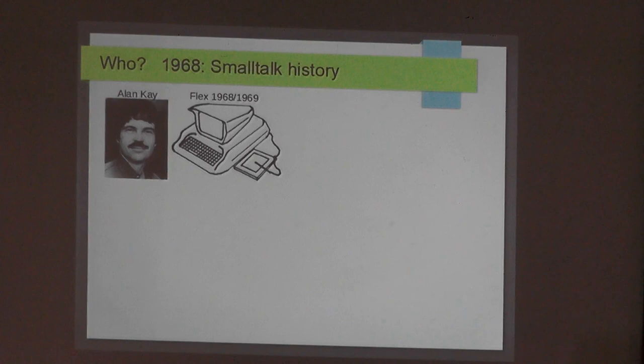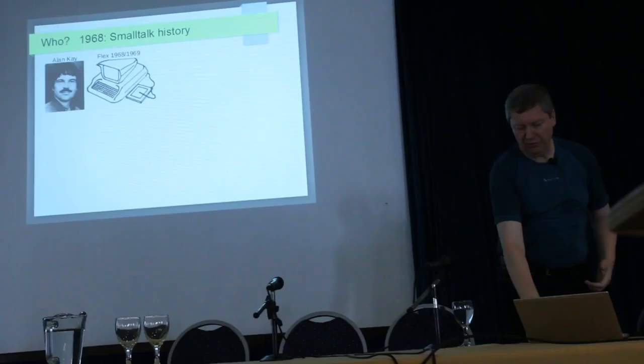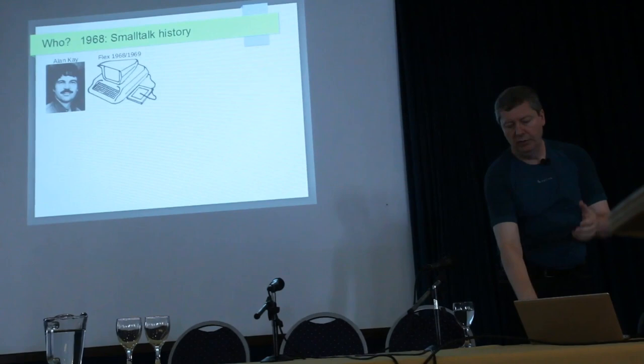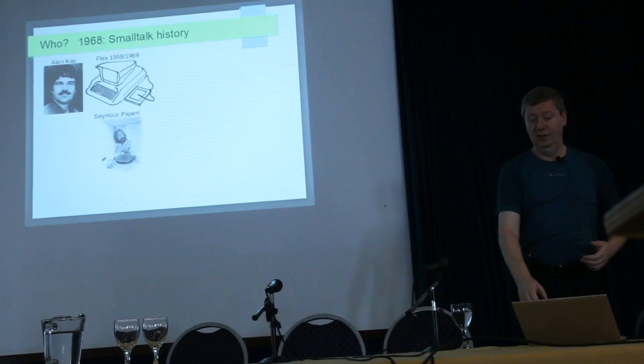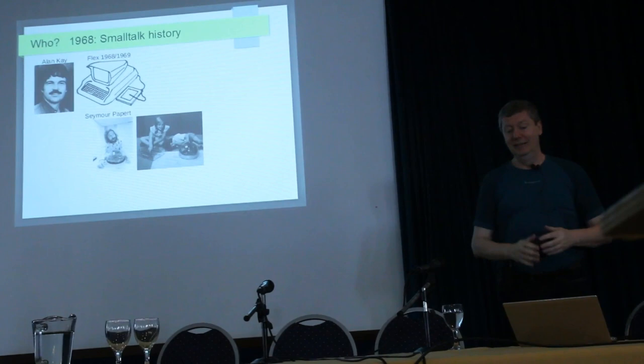Alan Kay, with his graduate work, worked with an engineer Ed Cheadle and they built a little hardware called the Flex Machine — a personal computer with a light pen and graphical user interface in the Flex programming system. While working on that, he visited Seymour Papert, who was showing a mechanical turtle and working with children. Alan Kay was delighted and thought children won't want a huge desktop — they'll want to sit in the grass with a Dynabook. That's the drawing he did in 1968.